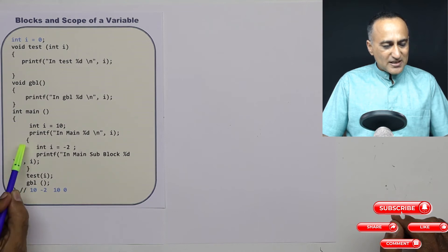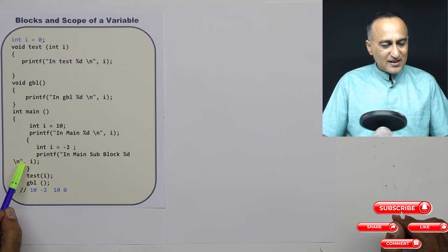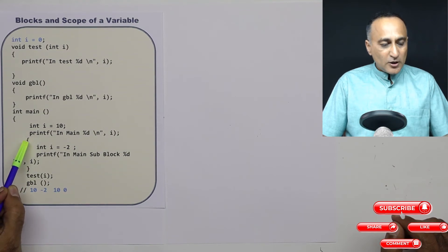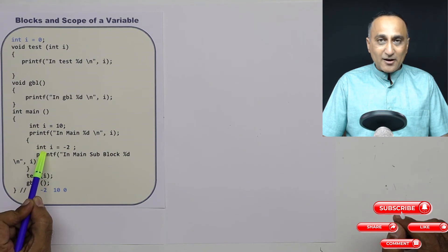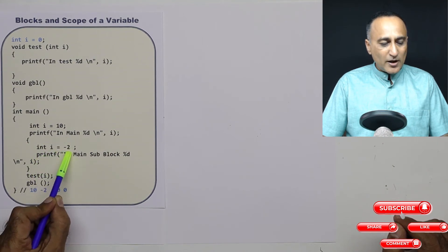Then what I do is I create a flower brace here, you can see a flower brace here ending here, this is called a block. Now within this block, I declare another variable i of the type integer with the initial value minus two.